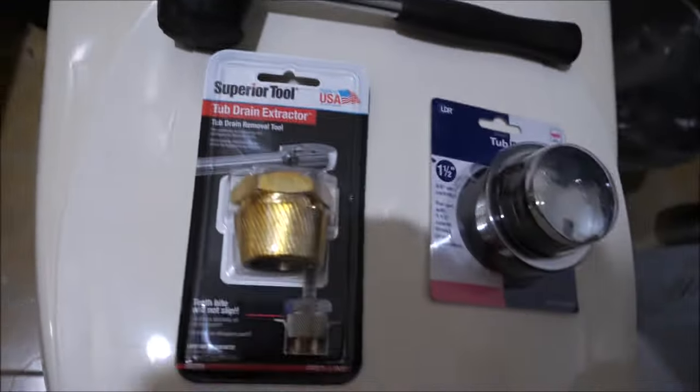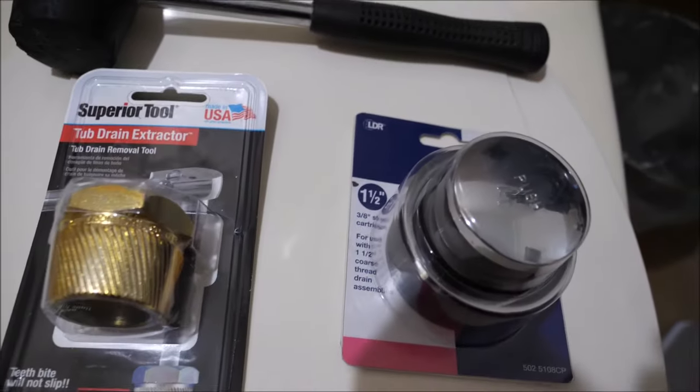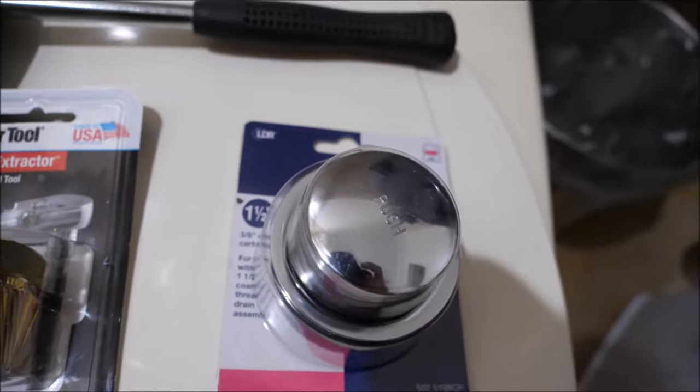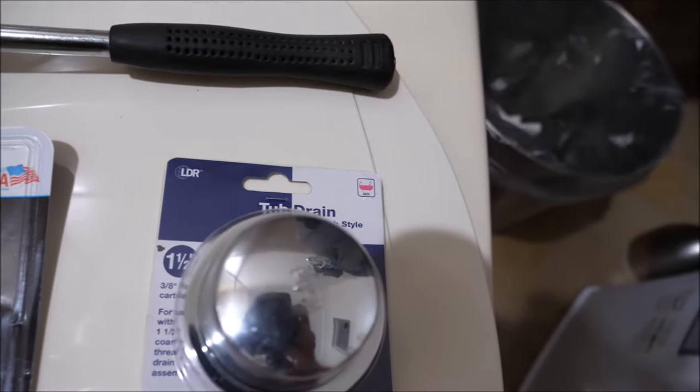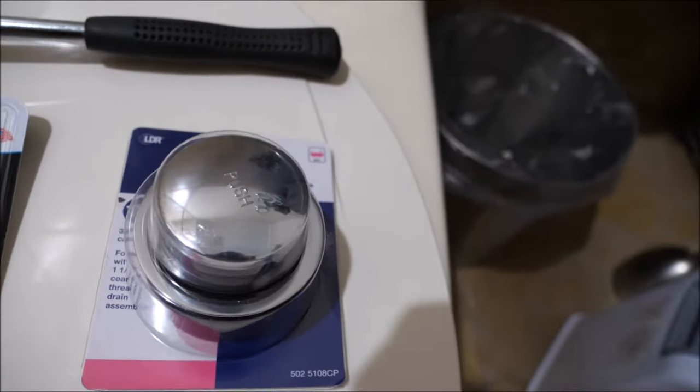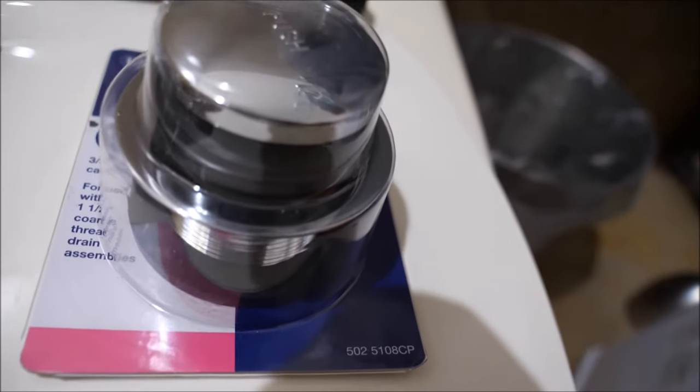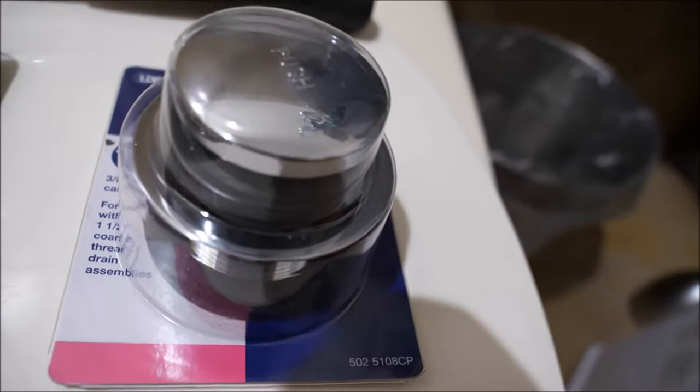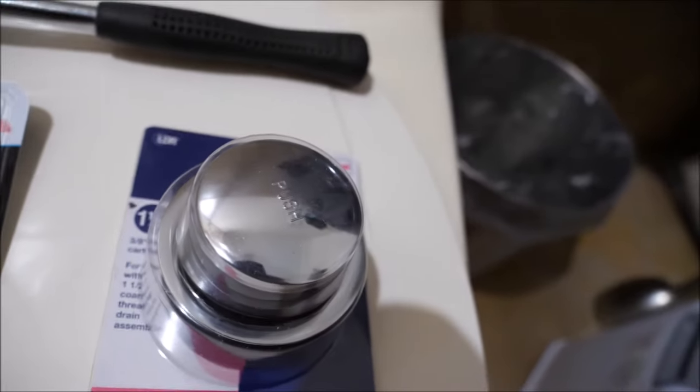So here are the tools of the project. We have got a replacement drain. You want to make sure you get the dimensions here. This drain is an inch and a half. This is a simple pop-up drain. You depress it, it seals. Depress it again, it's spring-loaded and pops up. Very simple. You can operate it with a toe.